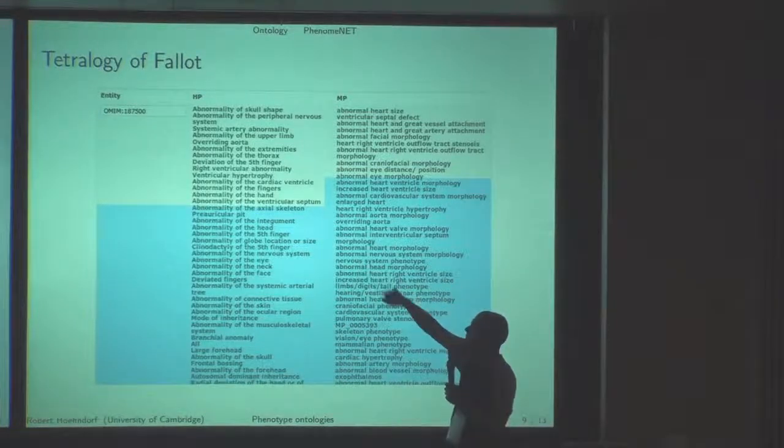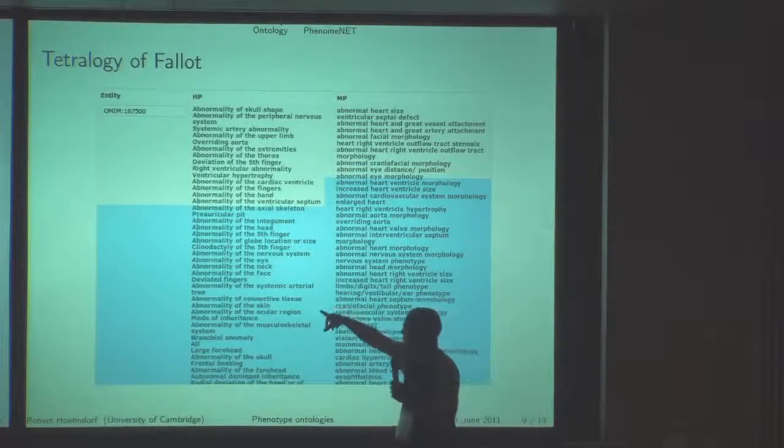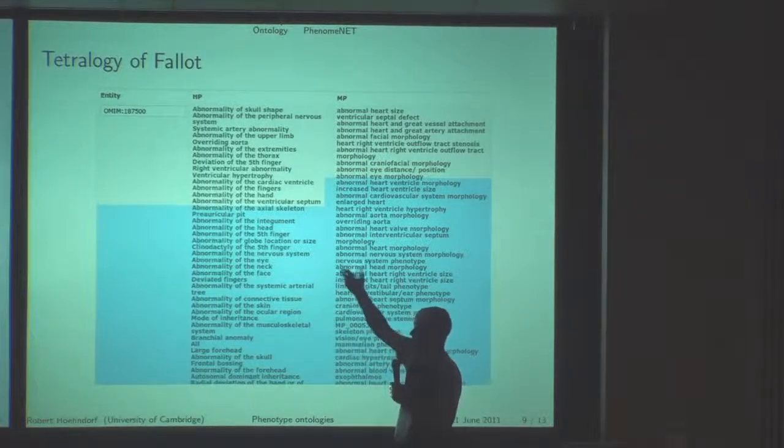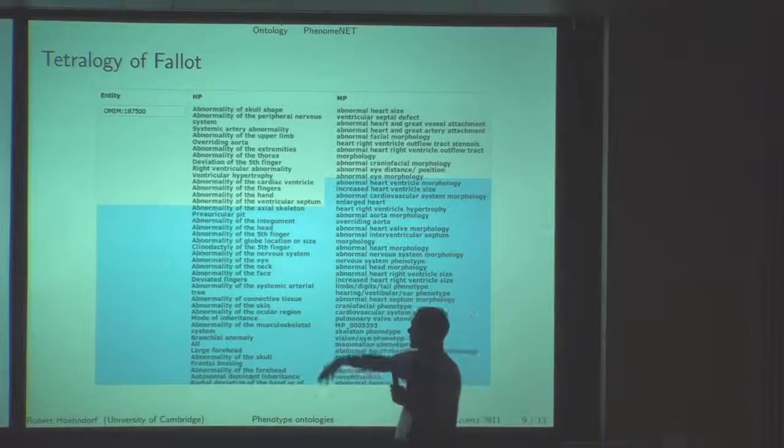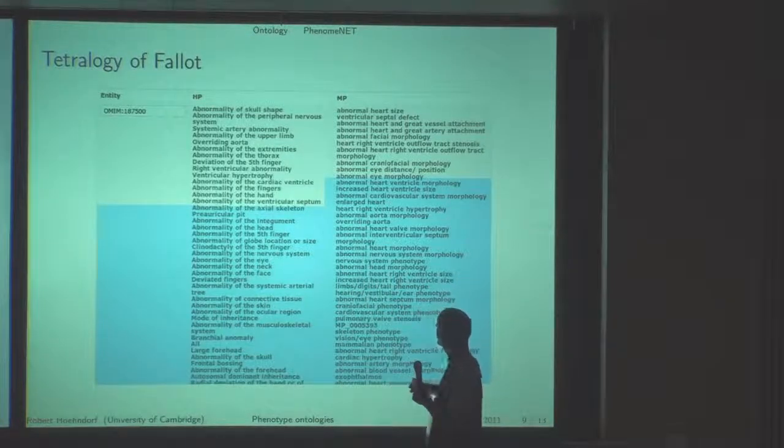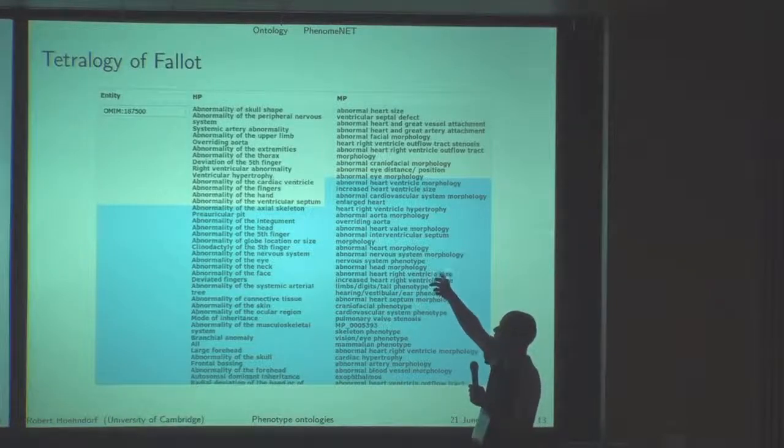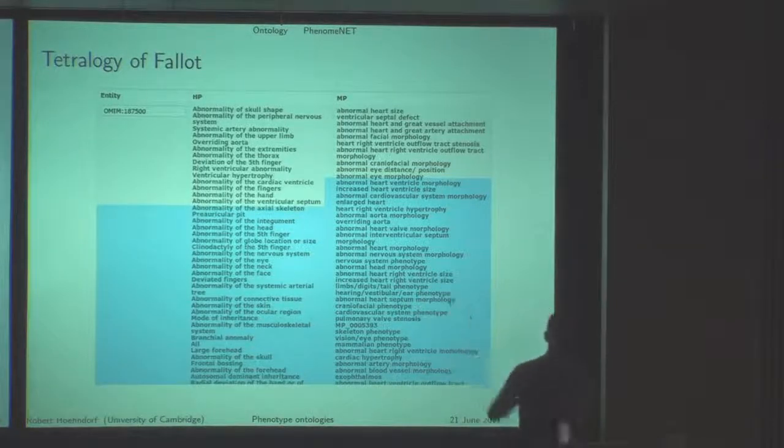We took the phenotypes that OMIM characterizes for human here and inferred all these superclasses—this is why these are very, very many—and then translated this in this phenotype ontology to mouse and to all the other species as well.